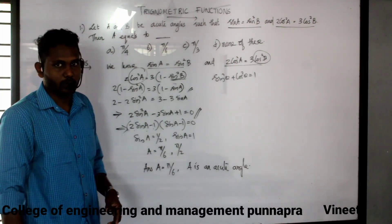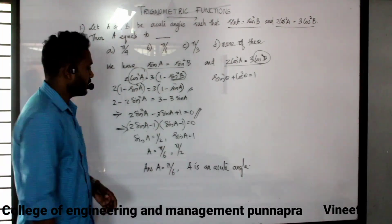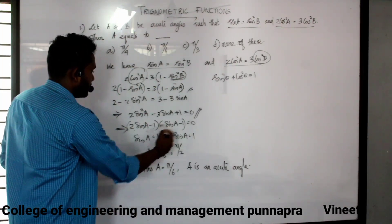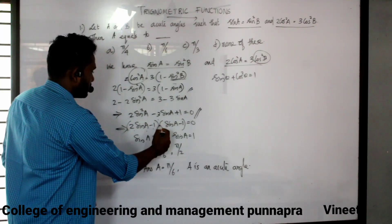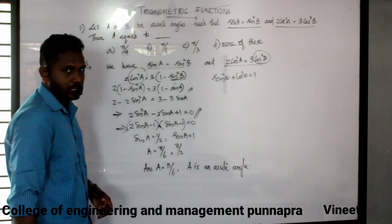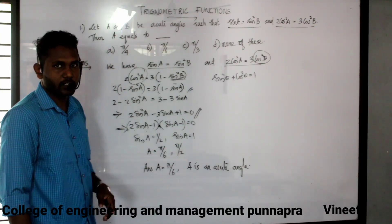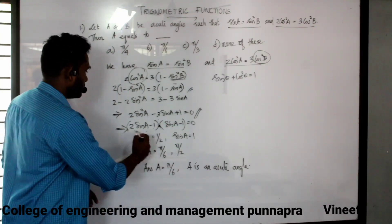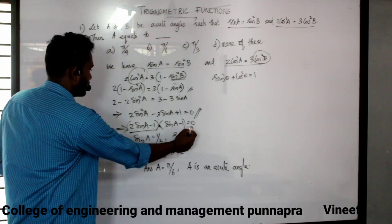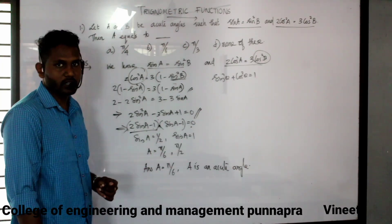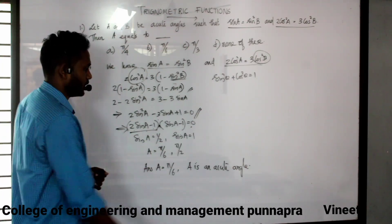We will replace the data. The equation e minus 1 is equal to 0. One term is 0 — the sin a value is 1 by 2.